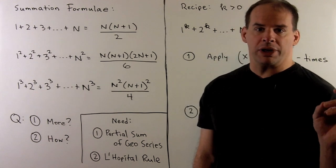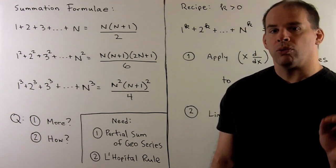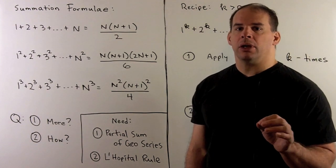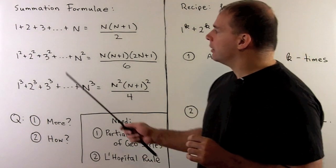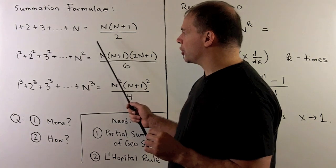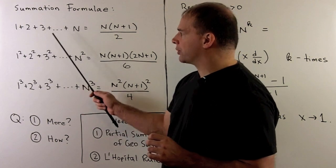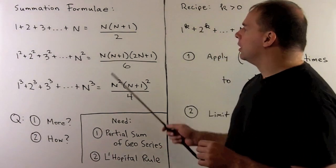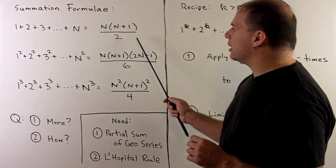Here's a leftover topic from integral calculus. Recall when we compute basic Riemann sums, we need to appeal to the following formulas for sums of integers. For instance, if I take 1 + 2 + 3 all the way up through n, by Gauss's trick we have n times (n+1) over 2.